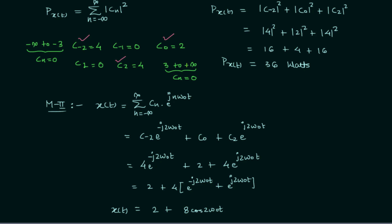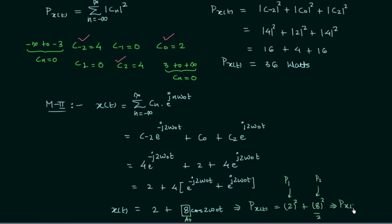From x(t) = 2 + 8cos(2ω₀t) it is easy to calculate the average power. Two is the DC term, and the average power of a DC signal equals the square of the DC value, so we have 2² = 4. For the cosine term with amplitude a₀ = 8, the average power equals a₀²/2 = 64/2 = 32. We can add these two powers because the DC value and cosine signal are orthogonal, so the total average power equals 4 + 32 = 36 watts.